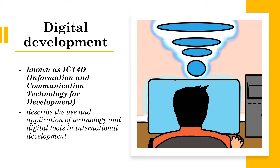Digital development, otherwise known as ICT4D or information and communication technology for development, describes the use and application of technology and digital tools in international development. The deployment uses the production of ICTs to support the process of transforming primarily agricultural economies and pushing them towards information and knowledge-based economies. Alongside this are what could be called social technologies, which underpin open development.